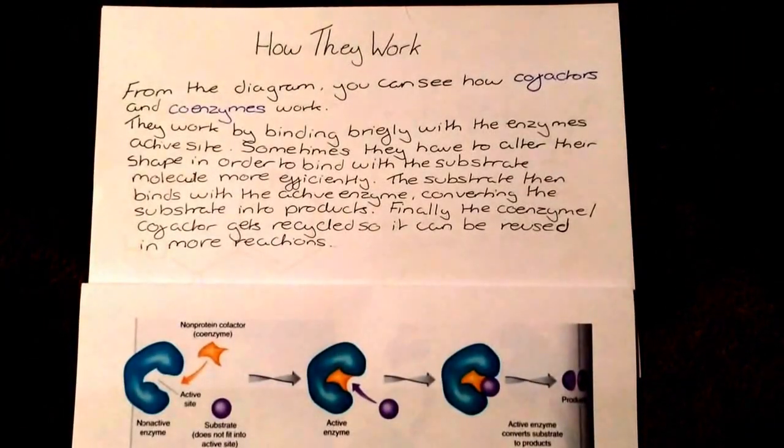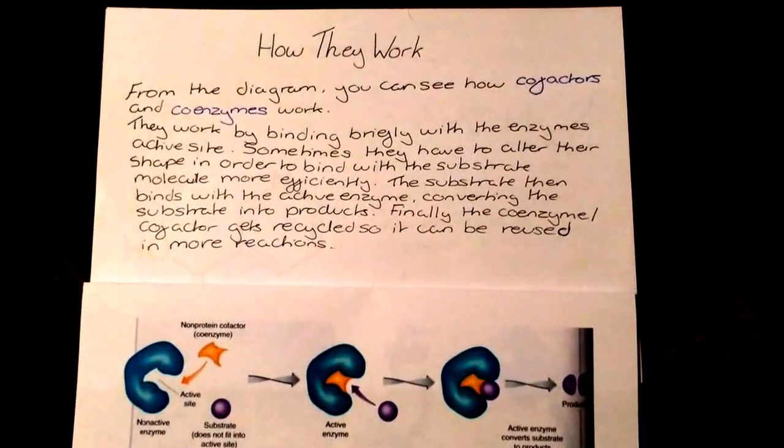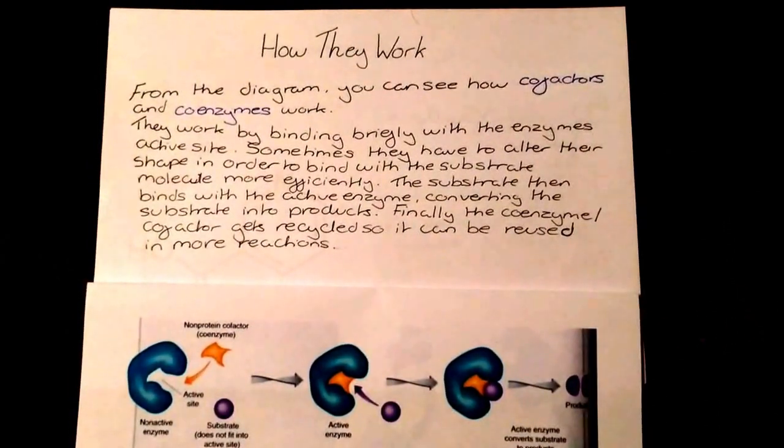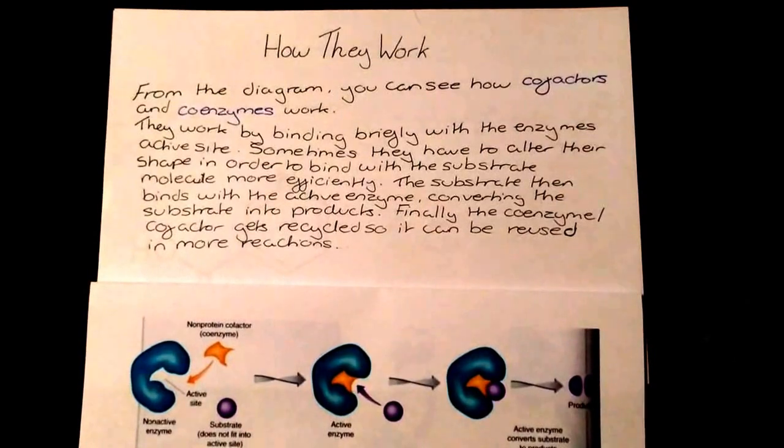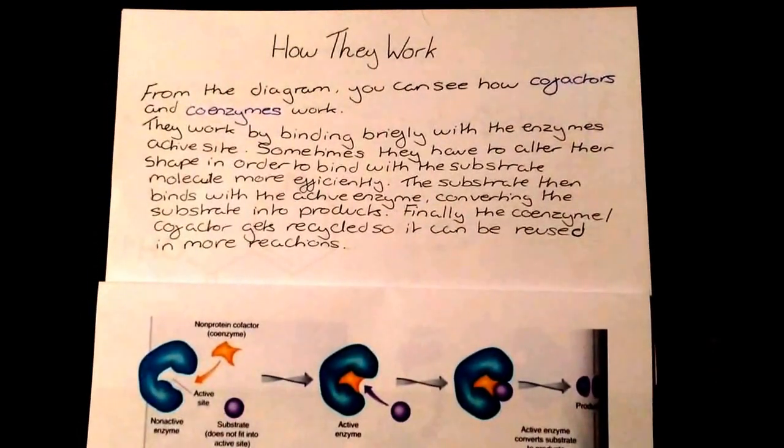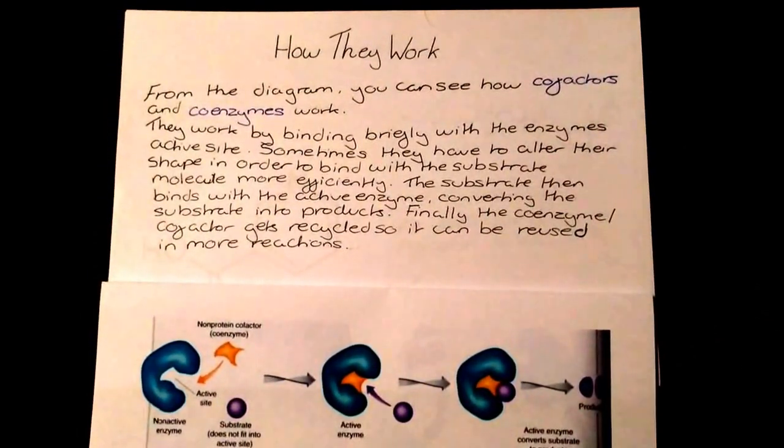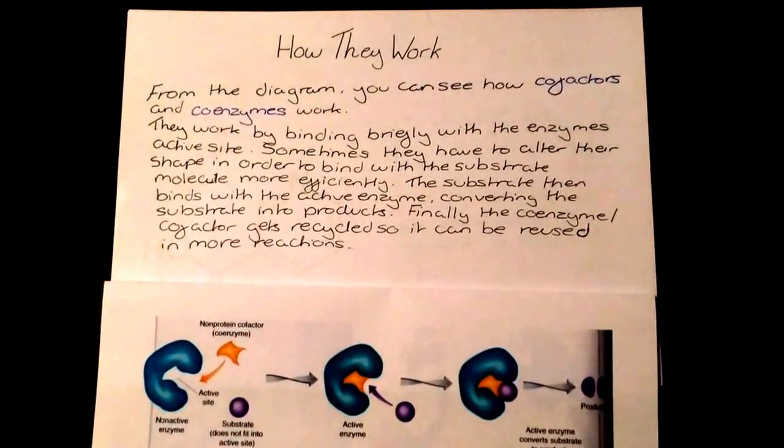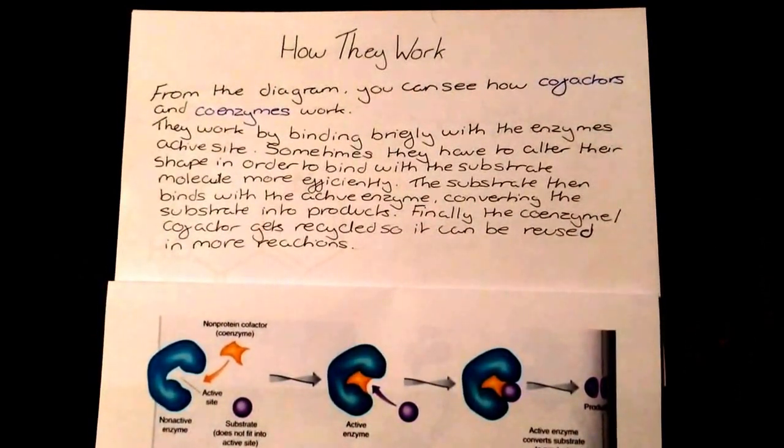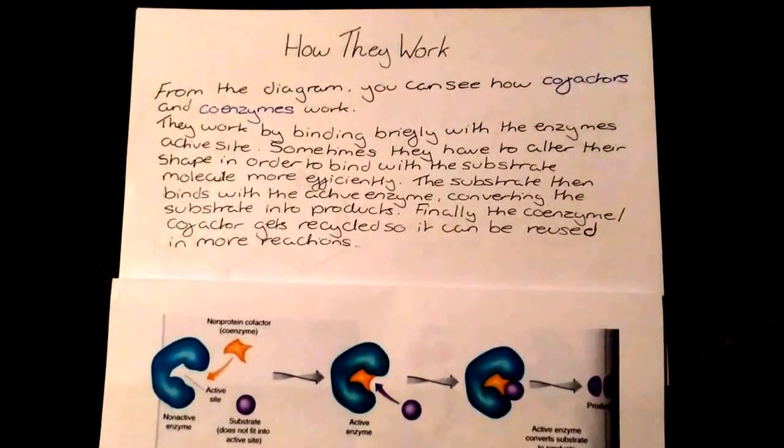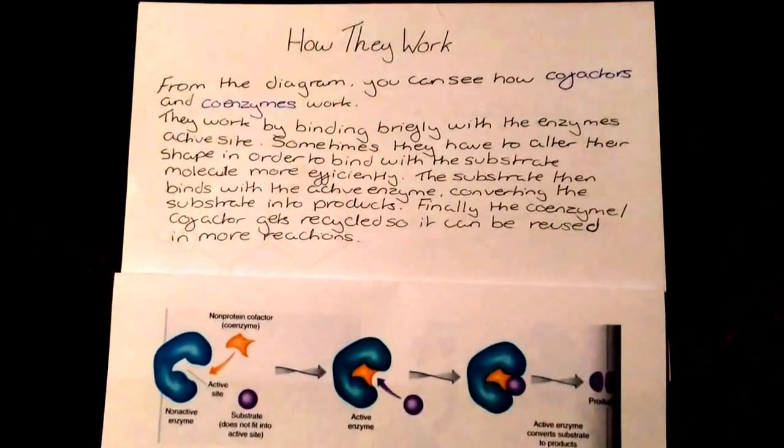How they work. From the diagram, you can see how cofactors and coenzymes work. They work by binding briefly with the enzyme's active site. Sometimes they have to alter their shape in order to bind with the substrate molecule more efficiently.